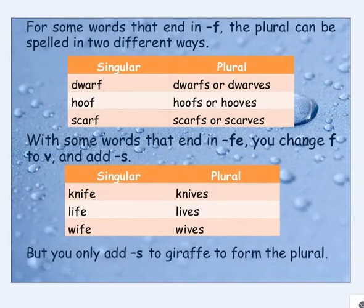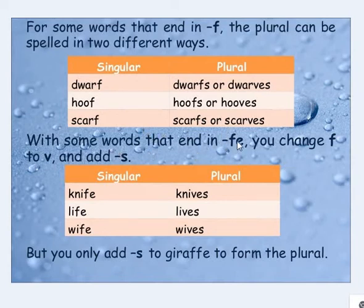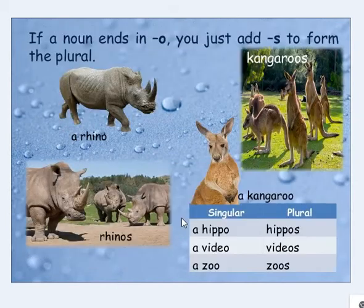Some words ending in -f can be spelled two different ways in the plural — for example, scarf can be scarfs or scarves. If the word ends in -fe, change it to -ves. For example: knife/knives, life/lives, wife/wives. But for 'giraffe,' you only add -s: giraffes.